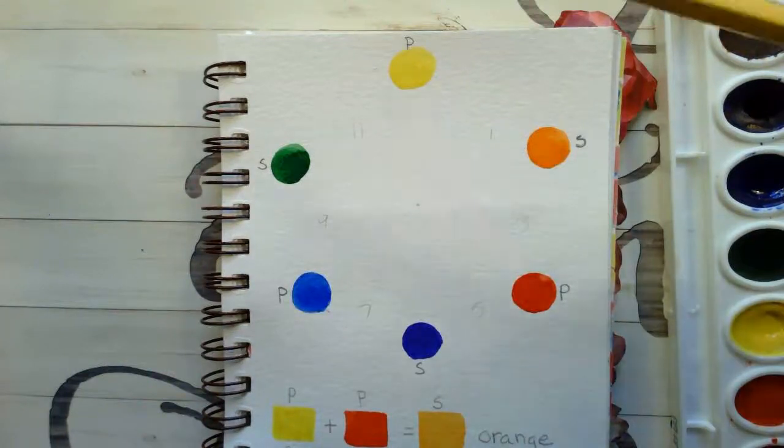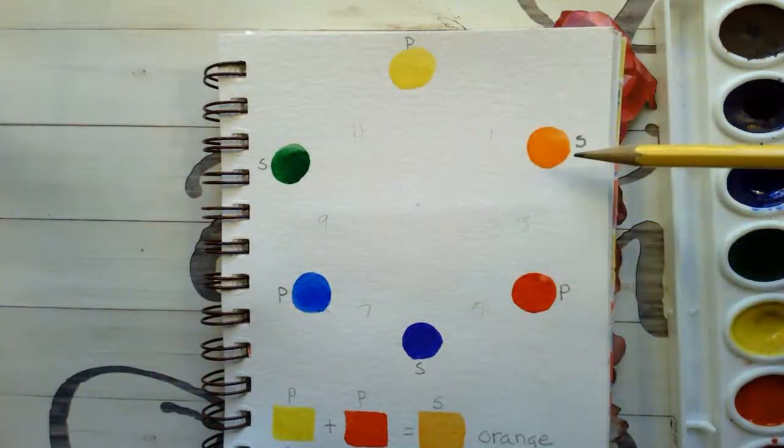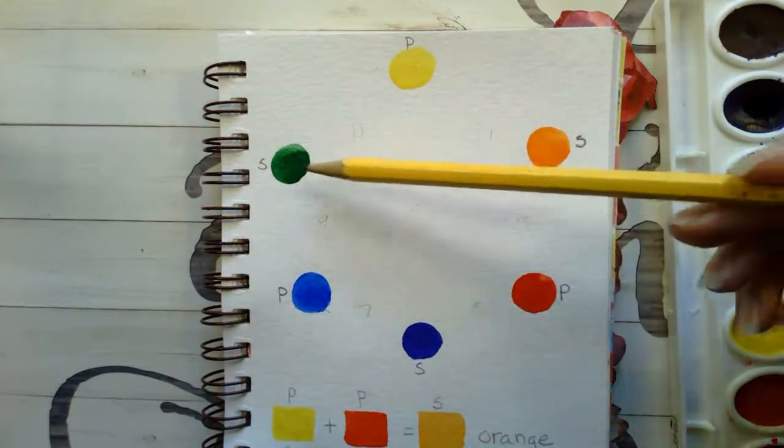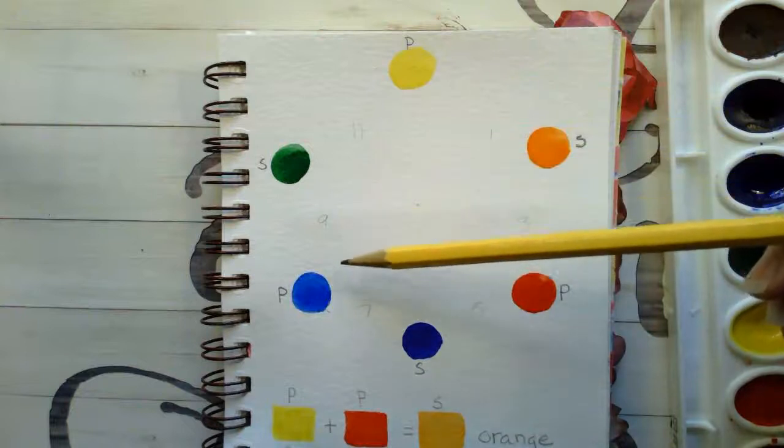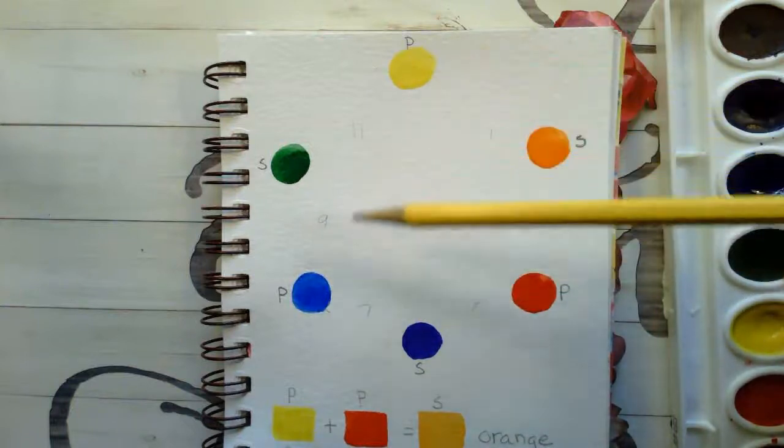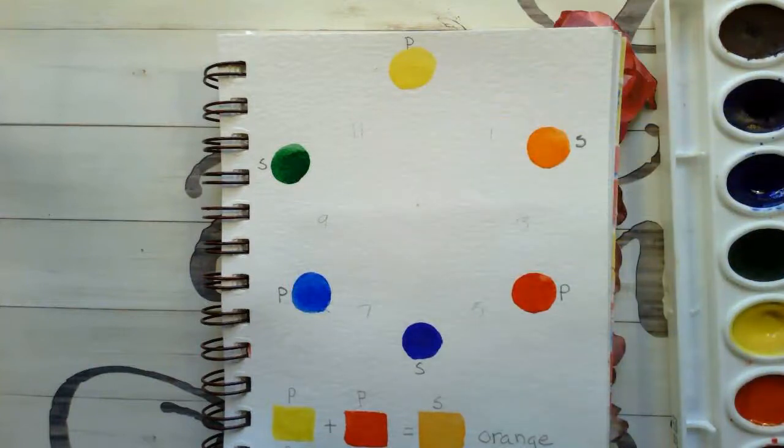And just for quick review, we already know that two primary colors mixed together make a secondary color. And the secondary colors are always located between the two primaries that are used to make them. That's one of the really cool things about the color wheel is it helps you to understand the relationships of the colors to one another.